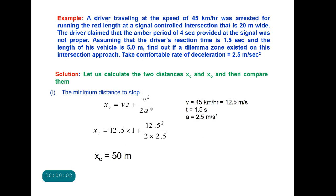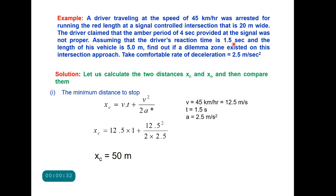Let us take one example to understand the procedure of eliminating the dilemma zone. A driver traveling at 45 km/h was arrested for running a red light at a signal-controlled intersection that is 20 meters wide. The driver claimed that the amber period provided is not proper. Assuming reaction time of 1.5 seconds and vehicle length of 5 meters, find out if a dilemma zone existed on this approach. Take comfortable rate of deceleration as 2.5 m/s². We calculate Xc and X0 and then compare them.